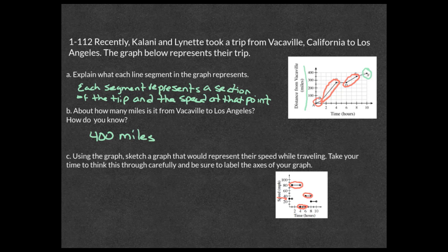From hours six to eight they cover roughly 80 miles, so they're going about 40 miles per hour. From hours eight to ten they cover about 50 miles, so roughly 25 miles per hour. Each step in the speed graph represents one of those sections, showing a good representation of travel time and miles covered.